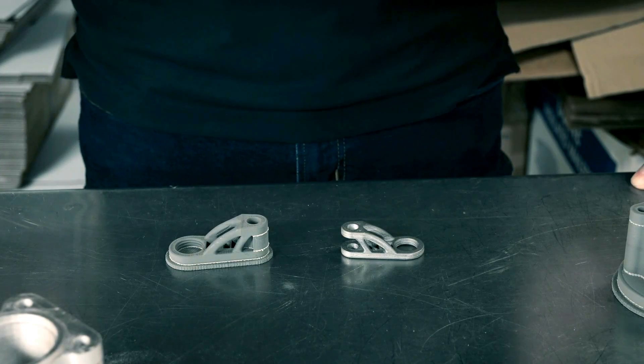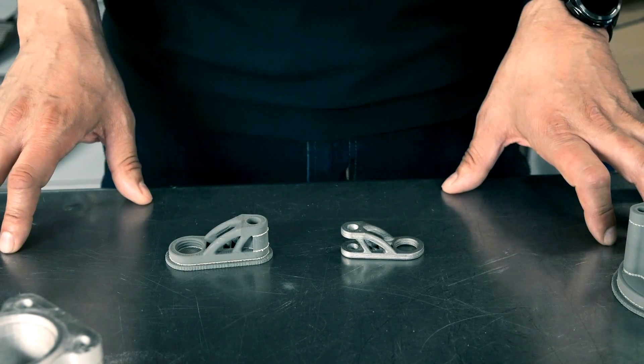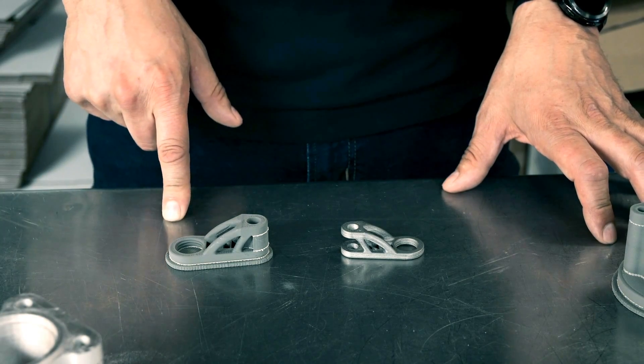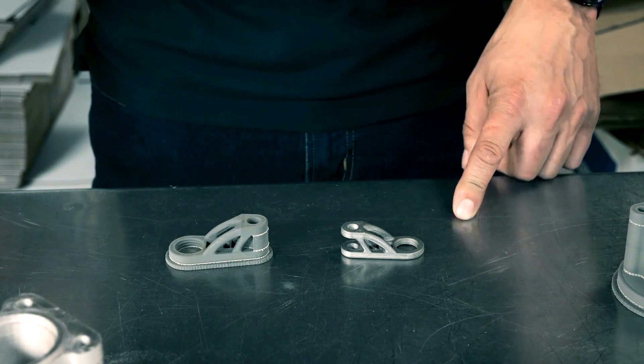So what do I mean by separable supports? Well, let's take a look at these two parts as an example. Here we have the same part in two different states. We have the green part fresh off the printer and then we have the finished part that's been debound and sintered.